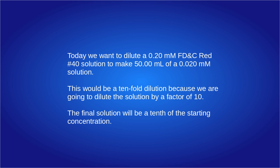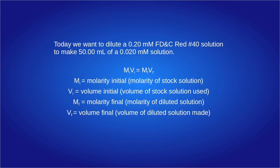First, let's calculate how much of the stock solution we will need to use to make 50 milliliters of the diluted solution. We will use the equation: initial molarity multiplied by the initial volume equals the final molarity multiplied by the final volume.